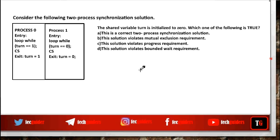Consider the following two process synchronization solutions. The shared variable turn is initialized to 0. Which one of the following is true? Is this a correct two process synchronization solution? Does it violate mutual exclusion requirement? Does it violate progress requirement? Or does it violate bounded wait requirement?